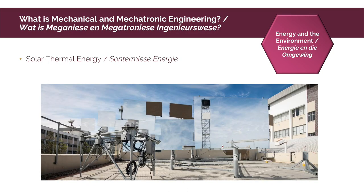We also do research on renewable energies, particularly solar thermal energy. In the slide you see mirrors reflecting heat to a central receiver — a tower with a white spot on top where all the heat is reflected, reaching temperatures in excess of 1000 degrees Celsius, which can be used to generate steam and electricity. This is called a heliostat and is an exciting area of research that can help solve the energy crisis in South Africa.